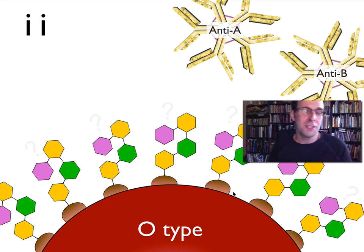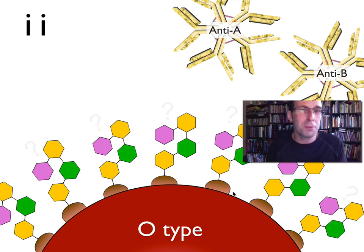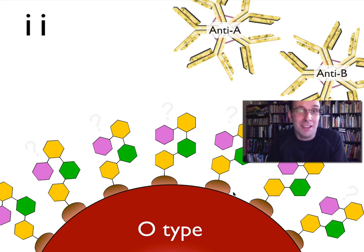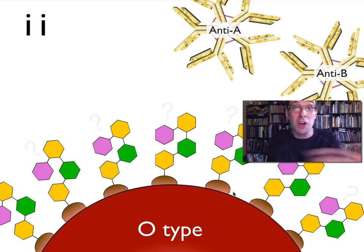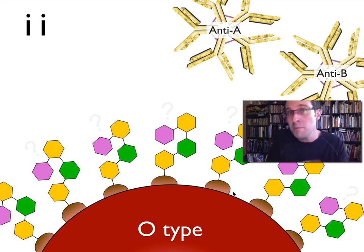So that's why, if you take some O-type blood and put it into someone who has A-type blood, that will be fine — because O-type blood doesn't have anything foreign. It's got H-antigens on it, just like that A-type person has. And as soon as that O-type blood gets into the person who has A-type blood, their glycosyltransferase enzymes will just convert those H-antigens into A-antigens, and that will be perfectly fine.